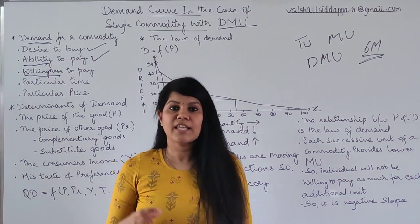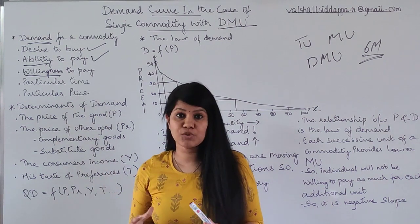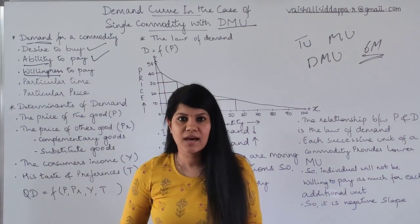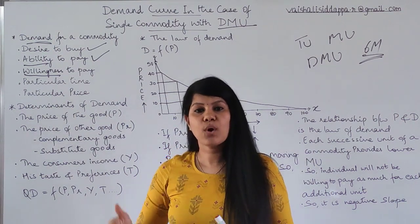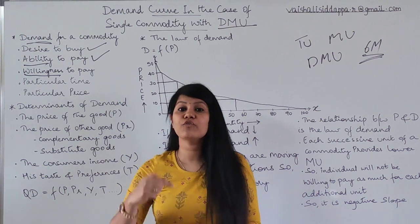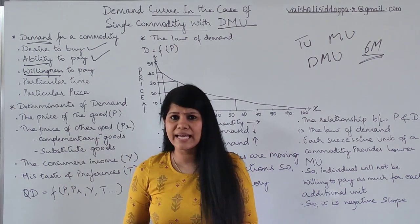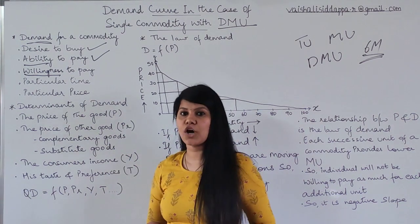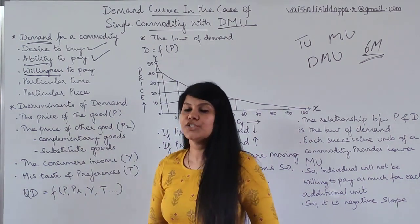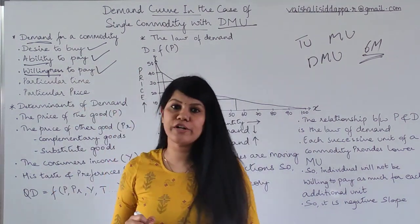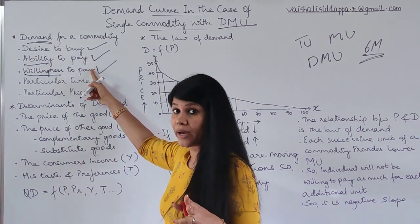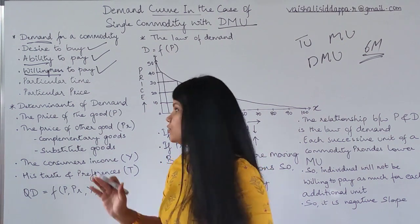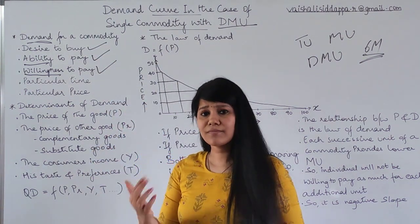The third condition is willingness to buy. Many times you are liking a good and you have enough money, but you feel it doesn't worth paying right now. You have money and desire, but you are still not willing to pay. So all three conditions — desire, ability to pay, and willingness to buy — must be fulfilled.